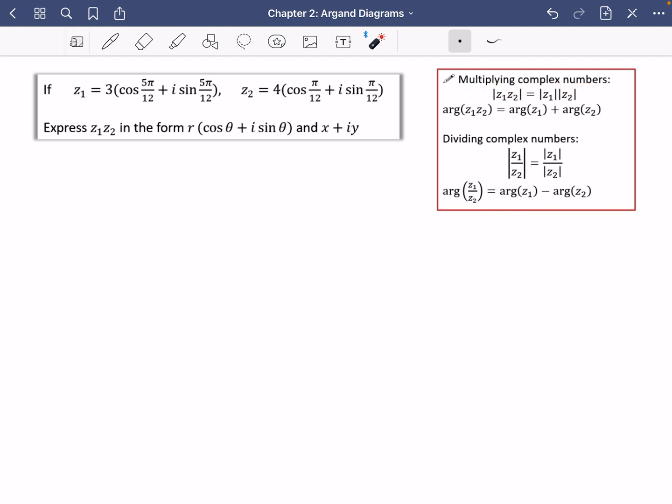So when you multiply complex numbers, when you do Z1 multiplied by Z2, the modulus of Z1 Z2 is the modulus of Z1 multiplied by the modulus of Z2. The arguments, when it's being multiplied, you add the arguments separately. Similarly, for division, if you're dividing two complex numbers, the modulus is just the top's modulus divided by the bottom's modulus. And the arguments is the first one's argument subtract the second one's argument when you're doing a division.